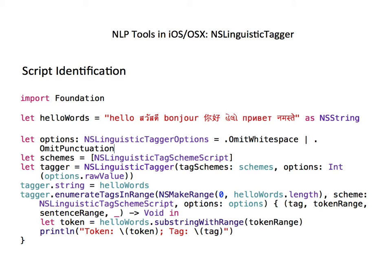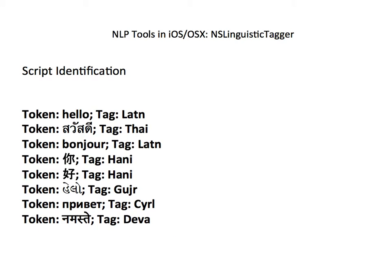Let's see another example. This time we have a string with the word for hello in different languages, and we want to identify the script for each word. We're not interested in named entity recognition, so we can leave out the joinNames option. Since we know which scheme we want, and the string is in different languages, we'll specify the array of schemes directly. The rest is the same, except for the scheme option in the enumerateTagsInRange function. When we print the results, we get the expected four-letter codes for each script. That's a brief overview of how to use NSLinguisticTagger to analyze text.